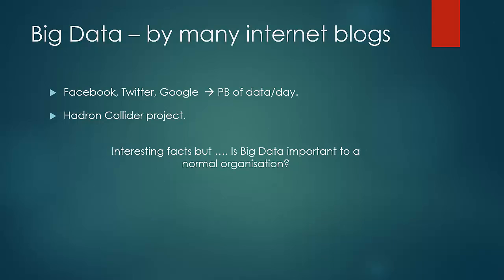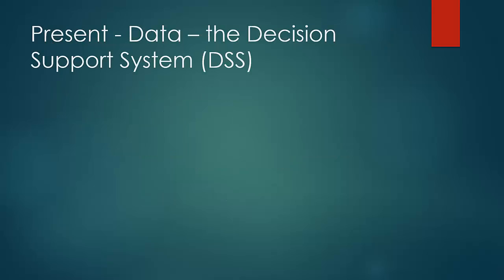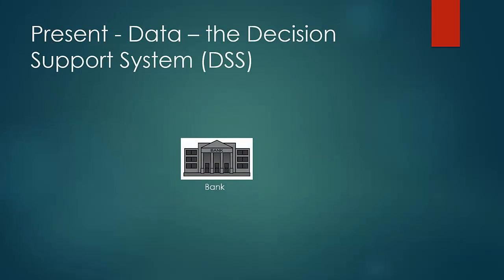I would begin with the classic problem of an organization trying to find the price of their new product and the importance of data in getting the optimal price. In this case, the organization would be a bank and the new product would be, say, insurance. This is a very unsophisticated example to show the value of data to an organization, so please don't mind the attributes taken into consideration.